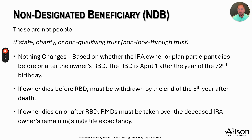If you mess up these rules, there are serious consequences. If you were mandated to take a required minimum distribution each year and you miss it, you could face a 25% penalty on that required distribution. For example, if the RMD was $50,000 and you accidentally missed it, that's a potential $25,000 penalty. This is really important when thinking about distributions if the account was left to an estate, charity, or non-qualifying trust.